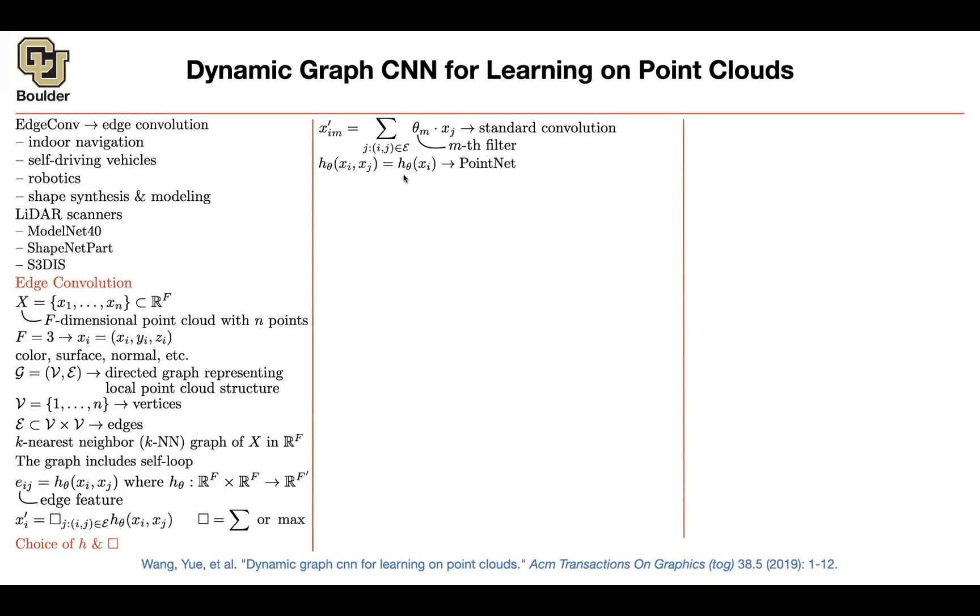For PointNet, the previous paper, our h of xi and xj was just a function of xi. And then in the end, you had a global average pooling over your points or global max pooling.